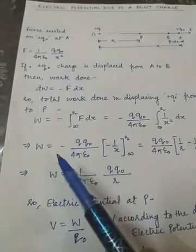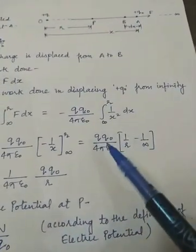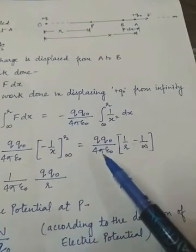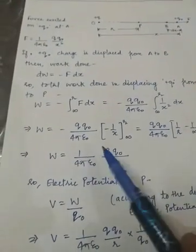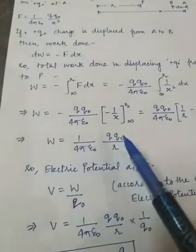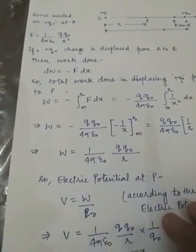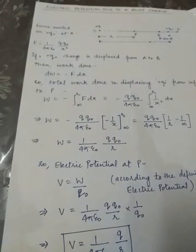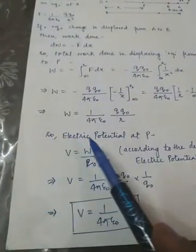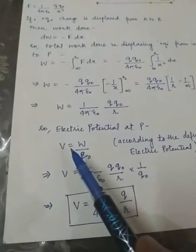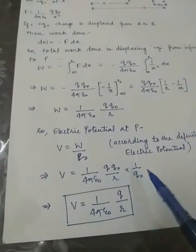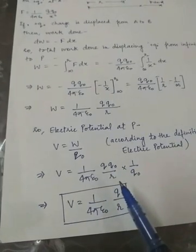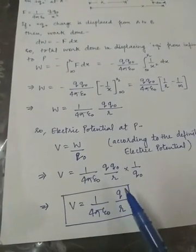The two negative signs cancel to give a positive result. Placing the limits, W = (Q Q naught / 4πε₀) × (1/R − 1/∞). Since 1/∞ = 0, W = (1 / 4πε₀) × (Q Q naught / R). The electric potential at point P is then V = W / Q naught = (1 / 4πε₀) × (Q Q naught / R) × (1 / Q naught). Q naught cancels, giving V = (1 / 4πε₀) × (Q / R).